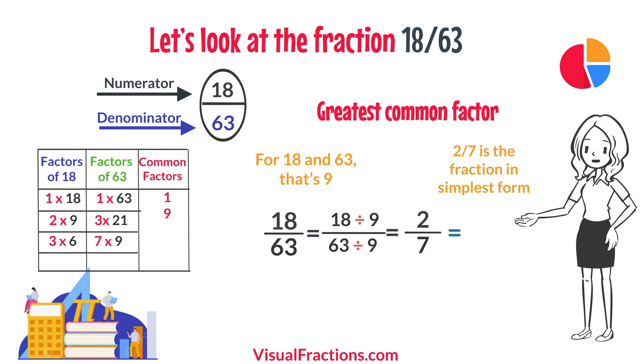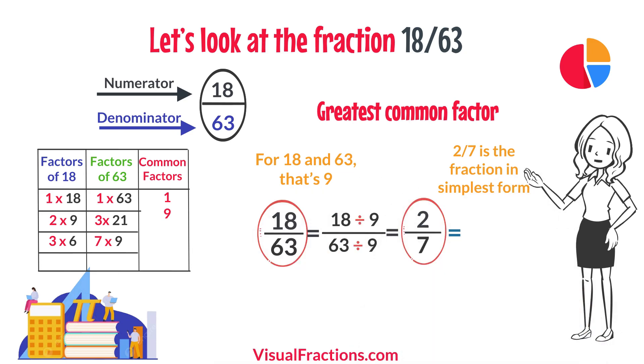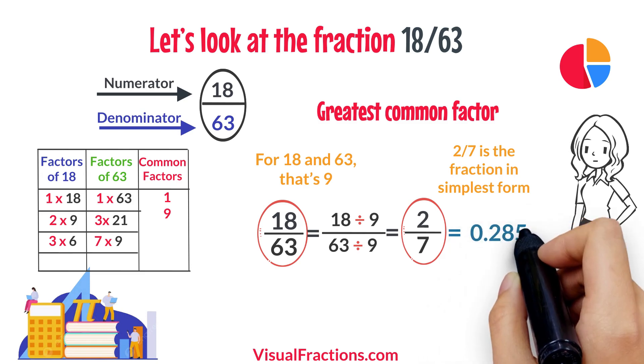It's interesting to note that both the original fraction 18/63 and the simplified fraction 2/7, though different in appearance, represent the same specific value when compared as decimals. The exact decimal for 2/7 is approximately 0.2857.